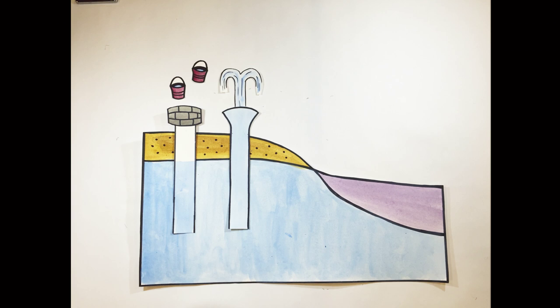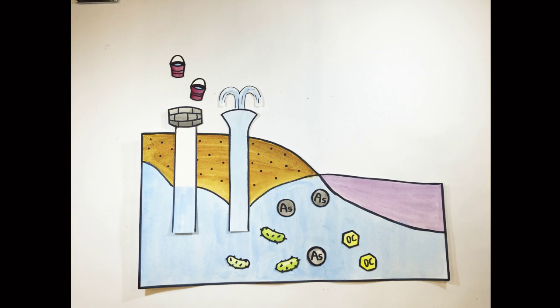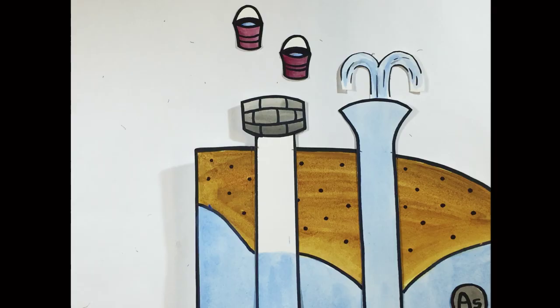Even though all this is happening naturally, human activities such as well drilling and irrigation can change the groundwater flow pattern and introduce more organic carbon that will further facilitate the arsenic release process.